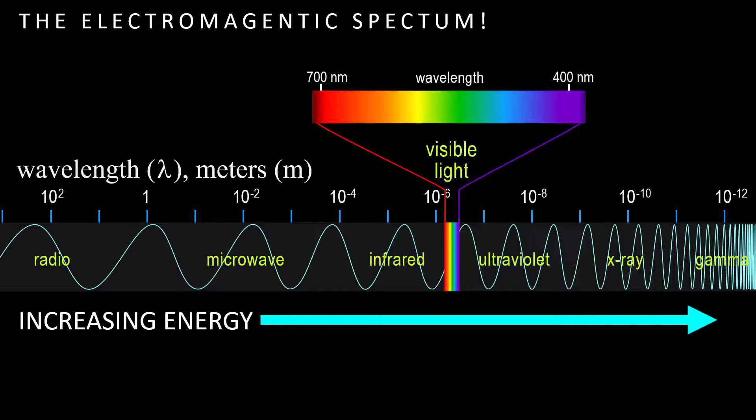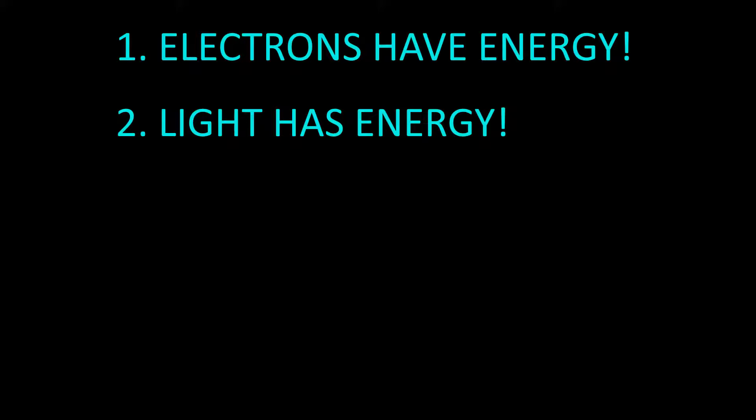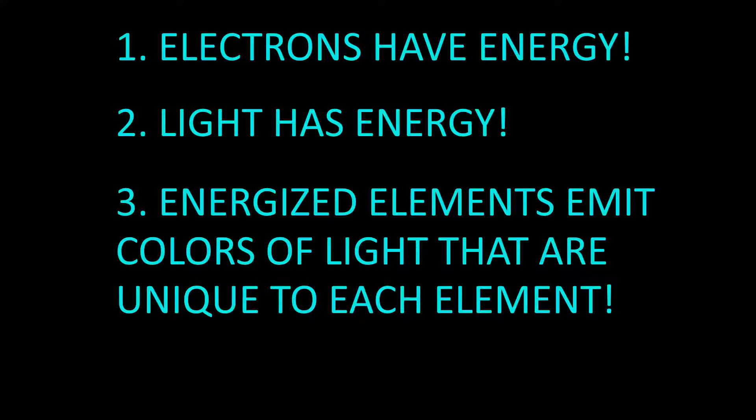Bohr knew that one, electrons have energy; two, light has energy; and three, energized elements emit various colors of light that are unique to each element. In other words, each element has its own unique signature of colors. But no one knew why. Bohr figured out the why, and that is what this video is about.